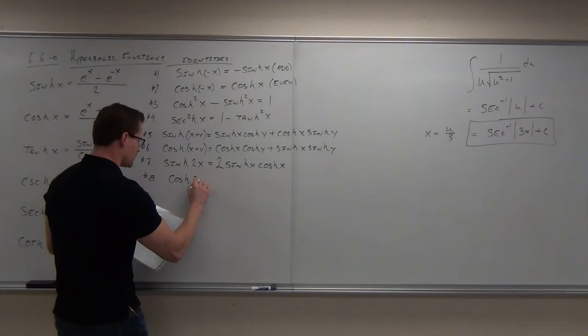Collecting everything: negative 2 hyperbolic cosecant squared of 2x times sinh(2x). Make sure those are arguments of the hyperbolic functions. It's a mouthful. Next time we'll talk about inverse hyperbolic functions.